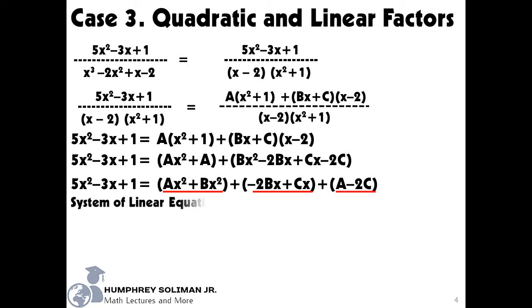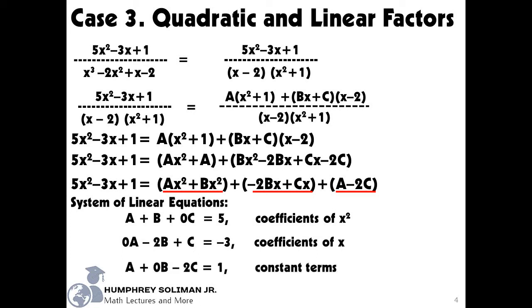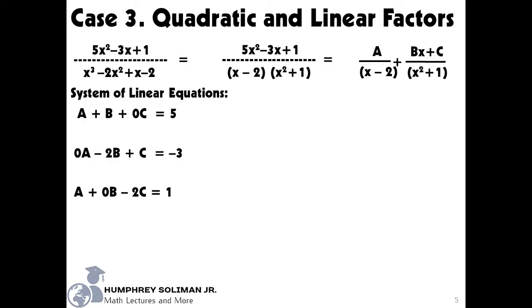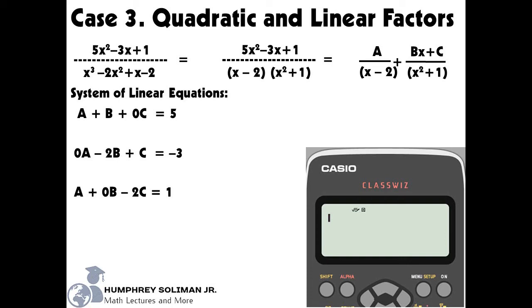We can now get a system of linear equations from here. We will get our first equation by equating the coefficients of x squared from both sides. Next, we will equate the coefficients of x to get our second equation, and so as the constant terms to get our third equation. You can see that I included terms with 0 as numerical coefficients here, so that we will not miss it later on in our use of Casio ClassWiz calculator.